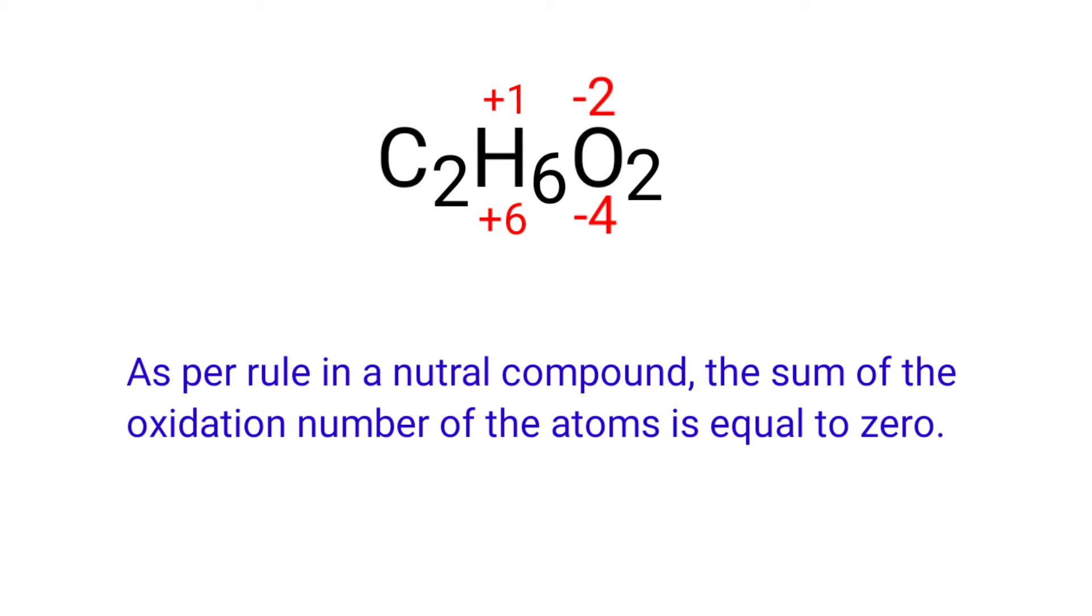So the numbers along the bottom must add up to 0. So the number under C2 must be -2. In the C2 element, there are two carbon atoms. So we can write the oxidation number of carbon is -1.